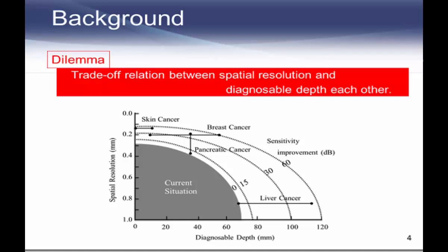But spatial resolution and diagnostic depth are in a trade-off relationship with each other. This figure shows a situation for cancer tumor diagnosis as an example. If we use higher frequency to increase the spatial resolution, it increases attenuation in the propagation medium and tends to decrease the diagnosable depth. Conversely, it is necessary to use lower frequency to increase the diagnosable depth, making it difficult to diagnose the tissue of an objective. Increasing both performances at the same time is extremely difficult.